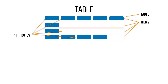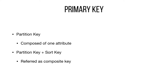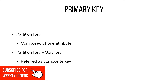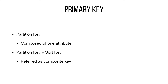An item is a group of attributes that is uniquely identifiable among other items. When you create a table, you need to give the table a name and then tell Dynamo what the primary key of the table is. The primary key uniquely identifies each item. There are two types of keys in Dynamo: the partition key alone, which is a simple primary key with one attribute that Dynamo uses to find items. Every item should have a different partition key. Dynamo produces a hash of the partition key and uses that hash to find and retrieve the item.